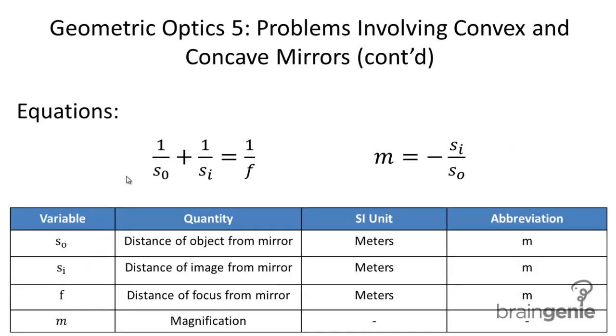Now a couple important equations. The first equation is what we call the mirror equation. This is one divided by the distance of the object from the mirror, plus one over the distance of the image from the mirror, and that equals one divided by the distance of the focus from the mirror. So the focal point, the focal length.